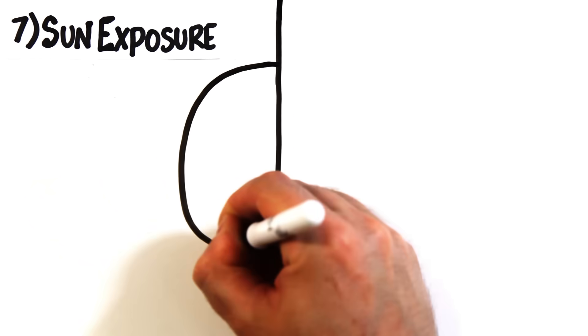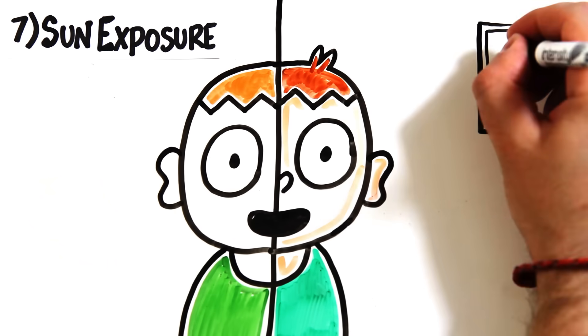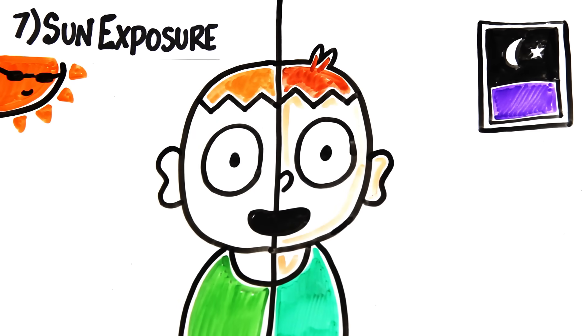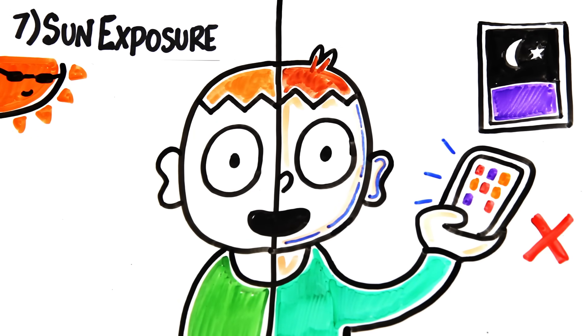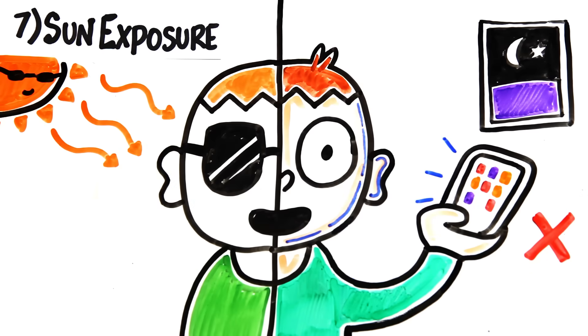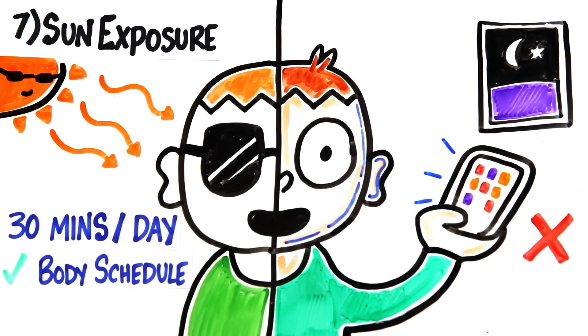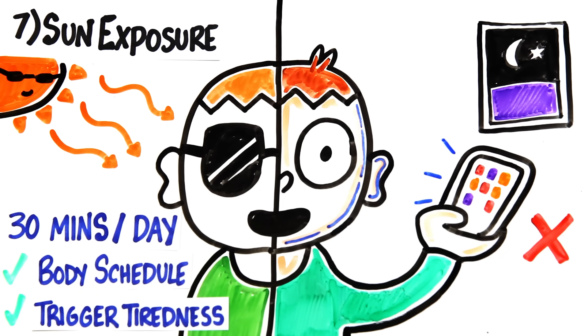And finally, number seven is to make sure you're getting sun exposure during the day and minimizing your light exposure during the evening. You've probably been told not to use your screen before bed, which is true, but it's equally as important to get natural sunlight for at least 30 minutes a day if you have problems falling asleep. This helps to condition your body's schedule and trigger tiredness at the right times.